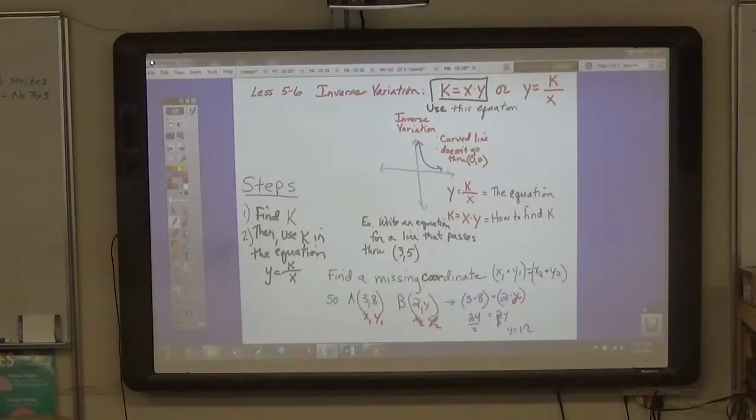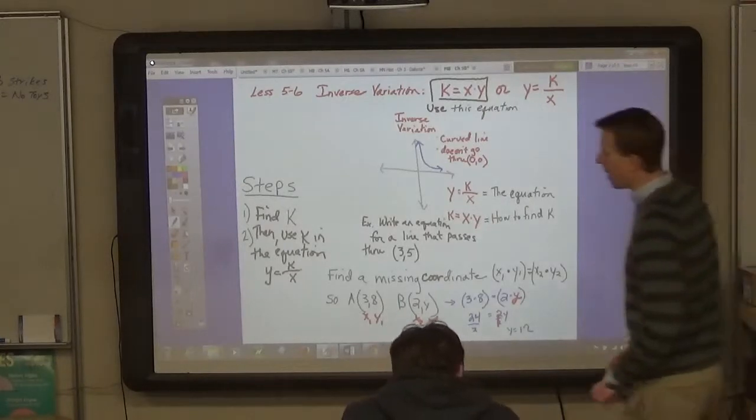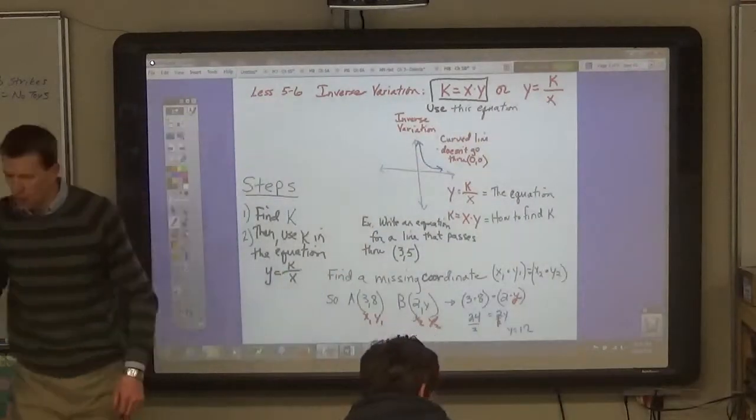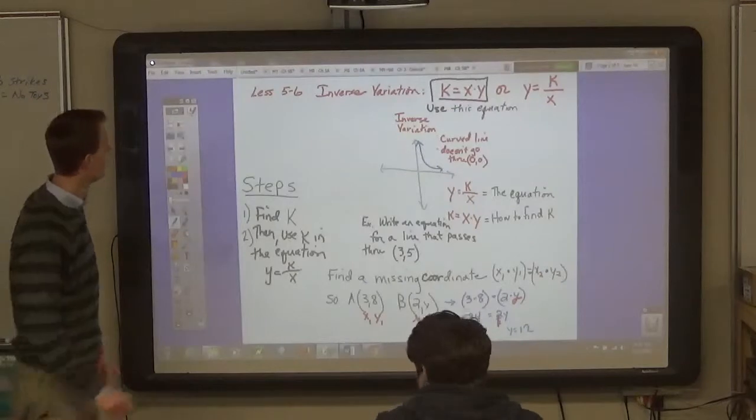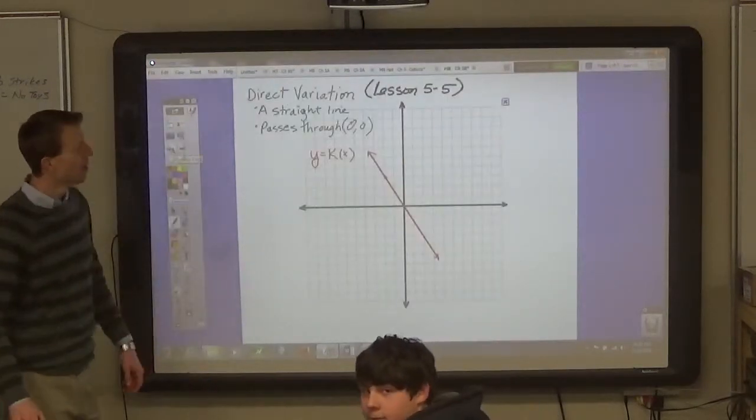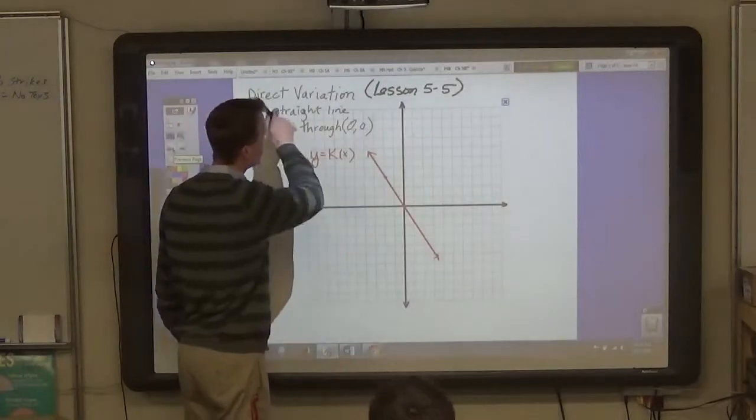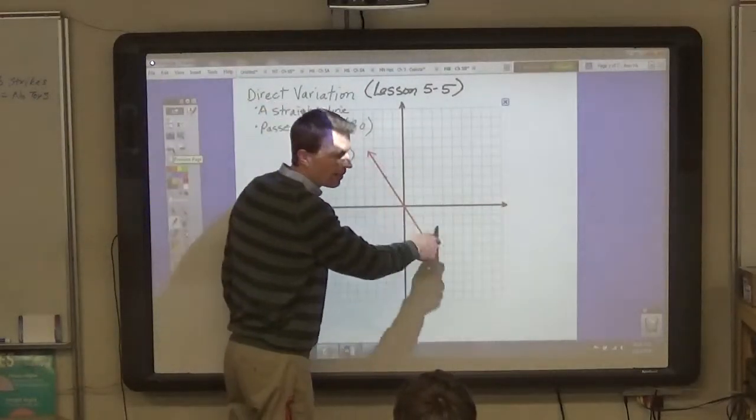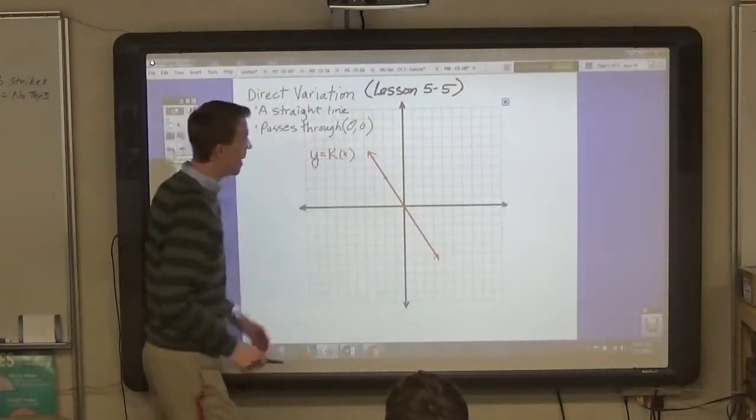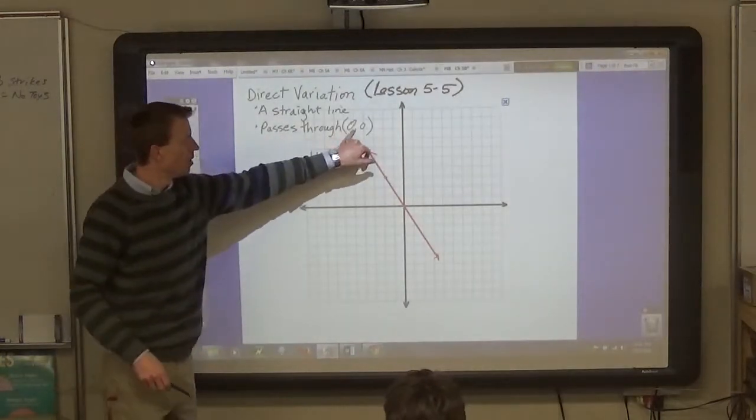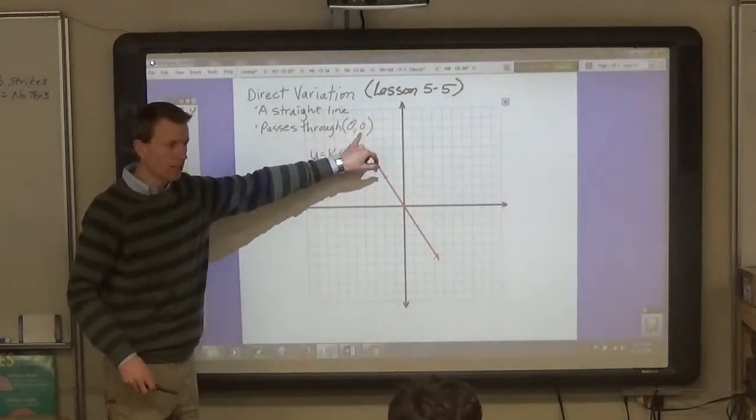Okay, 8th graders, we're going to work on Lesson 5-6, which is inverse variation. Last time we talked about direct variation. Lesson 5-5 was on direct variation, and direct variation always gives you a straight line, and it always passes through this point, 0 comma 0.